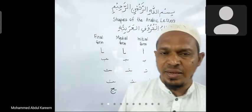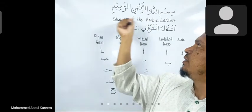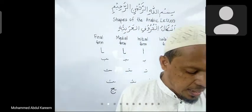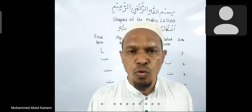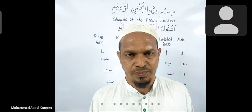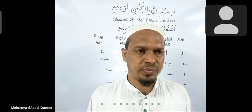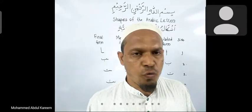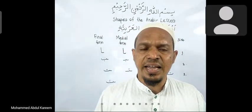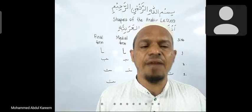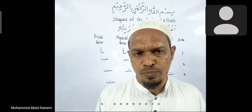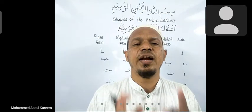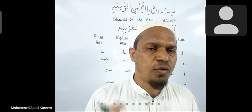Today I am explaining about the shapes of Arabic letters. Arabic letters take different forms depending on their occurrence in a word. If they appear in the beginning of the word they take a different form, if they appear in the middle they take a different form, and if they appear at the end they take a different form. We will learn about all four forms.